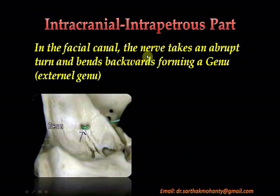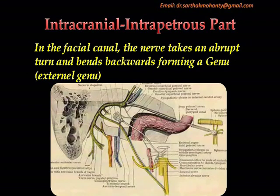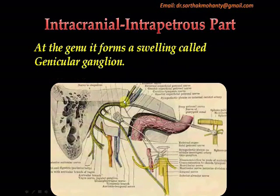Now in the facial canal, the nerve takes an abrupt turn and bends backwards forming a genu — the external genu. Here it turns abruptly backwards and forms a loop called the external genu. At the genu it forms a swelling called the genicular ganglion, which can be seen as a swelling over the nerve at this point.